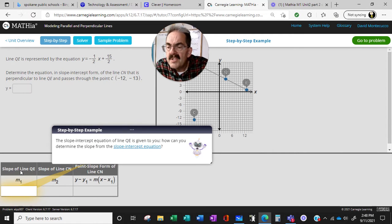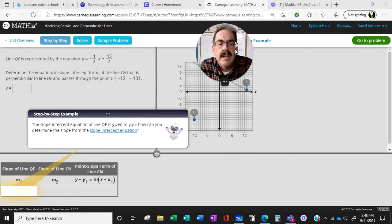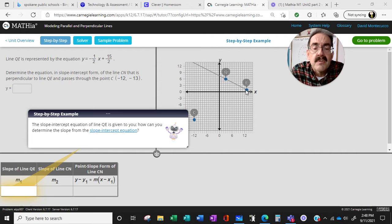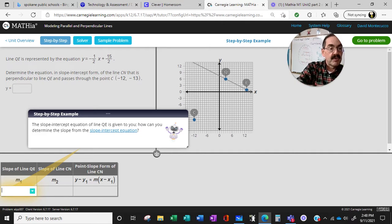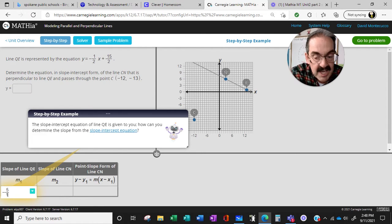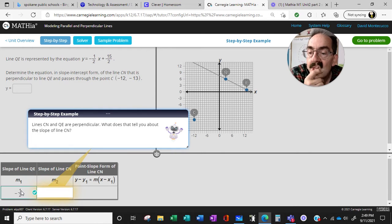All right, so now step by step. The slope of the line QE. Let's blow this up here. 5 over 10. But if it's coming downhill, negative slope. Negative 5 slash 10. Awesome.